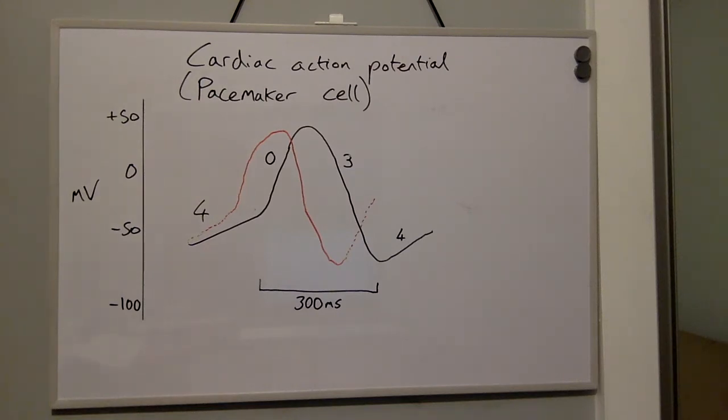If we compare this to when there is parasympathetic stimulation of the heart, the gradient or slope of phase four will decrease. This occurs because the vagus nerve acts to slow the discharge rate by hyperpolarizing the cell membrane through increased permeability to potassium. The membrane potential is therefore more negative, so will take longer to reach threshold potential and to discharge.